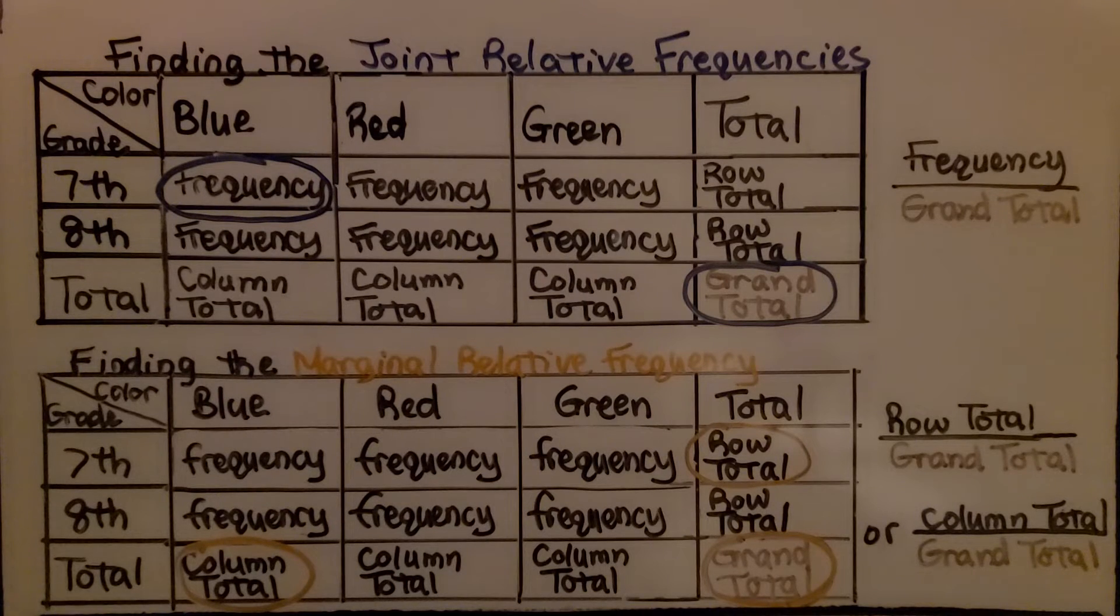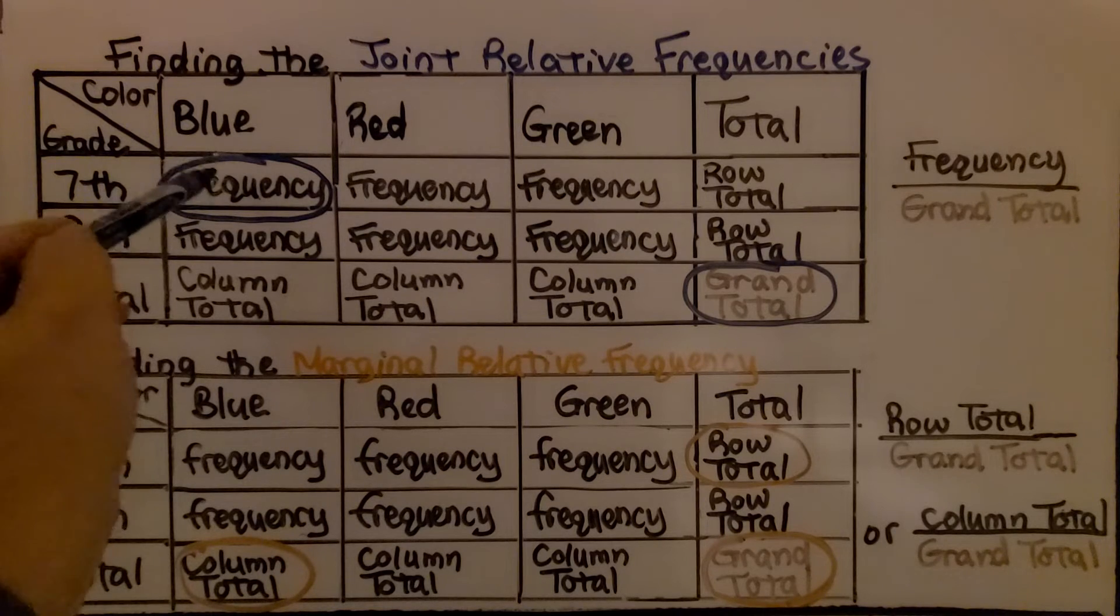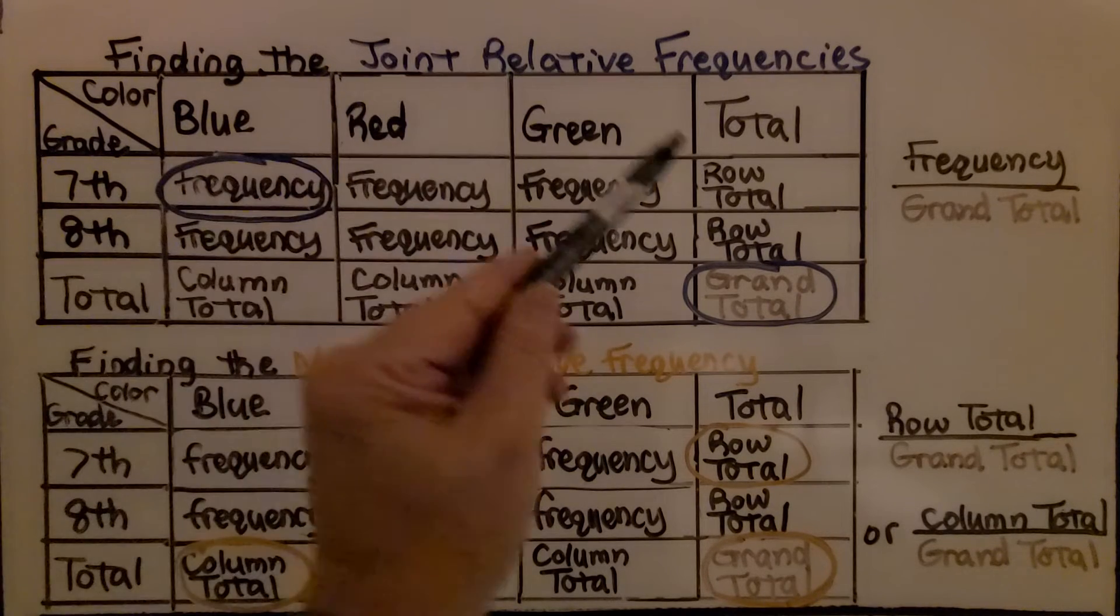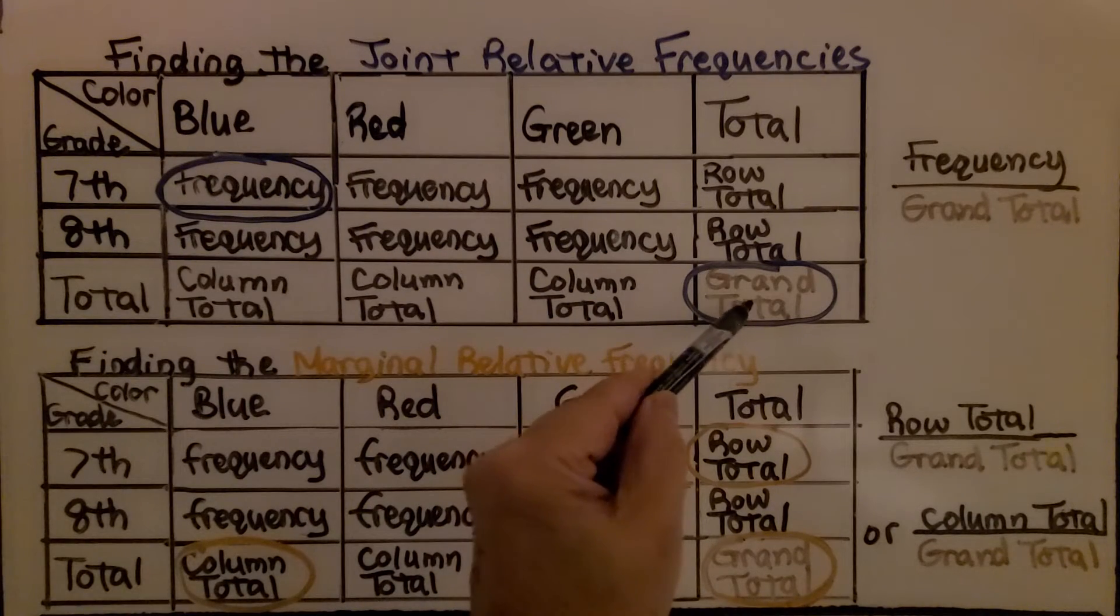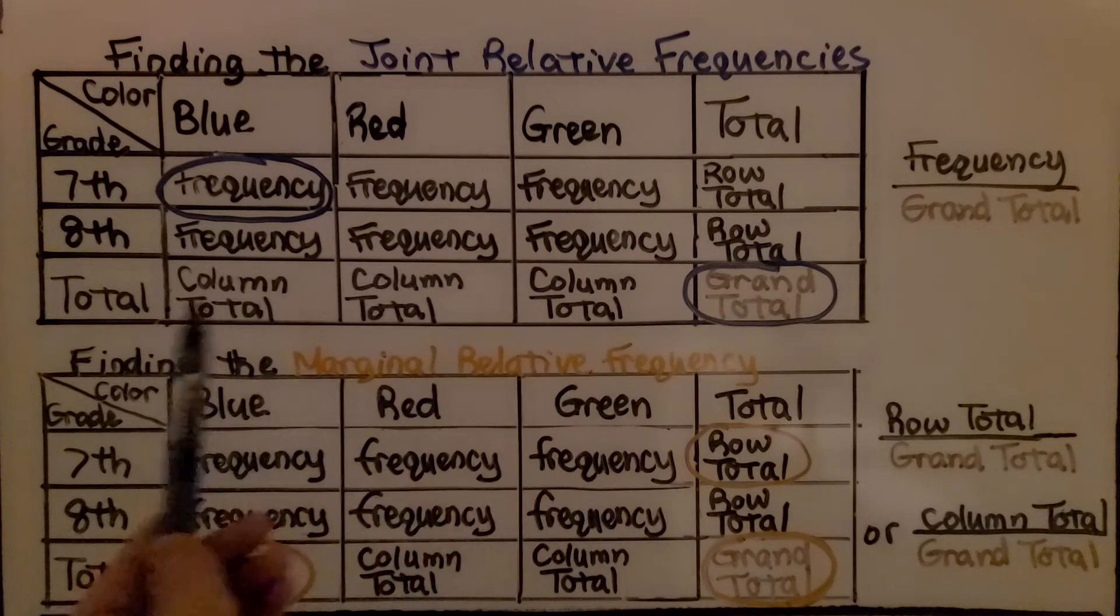Here's a quick recap so that we can move forward in this lesson. For finding the joint relative frequency, we take the frequency and we divide it by the grand total. That's this box down here. It's the total of the columns and the rows.